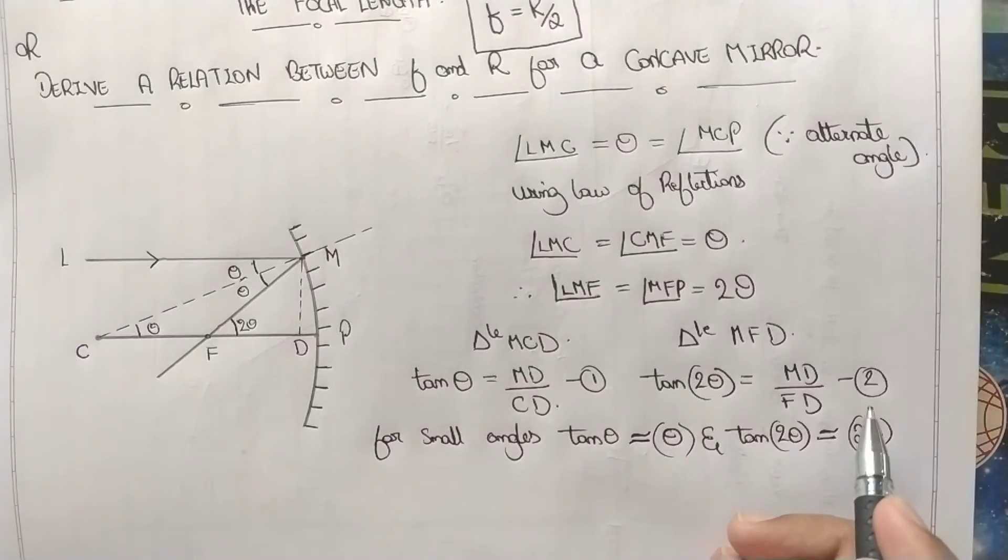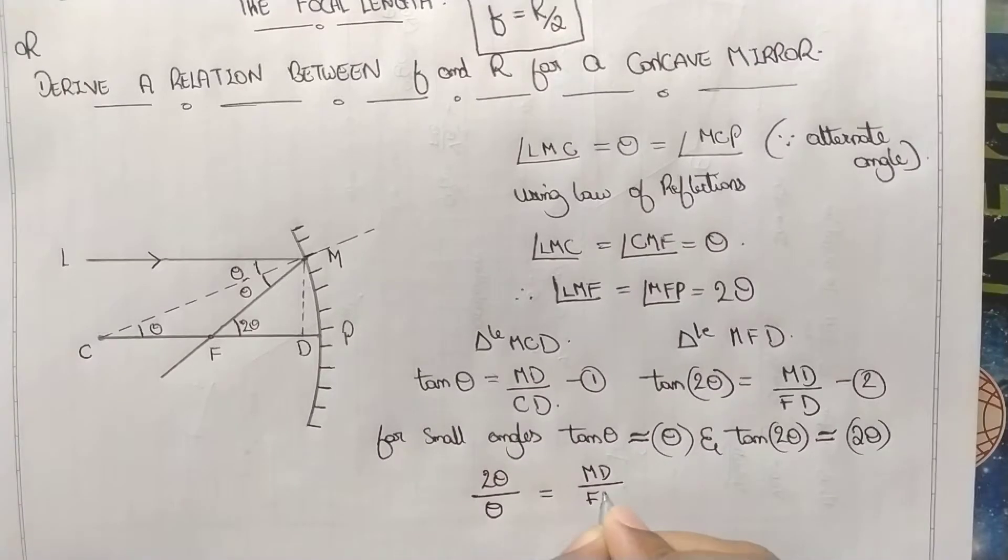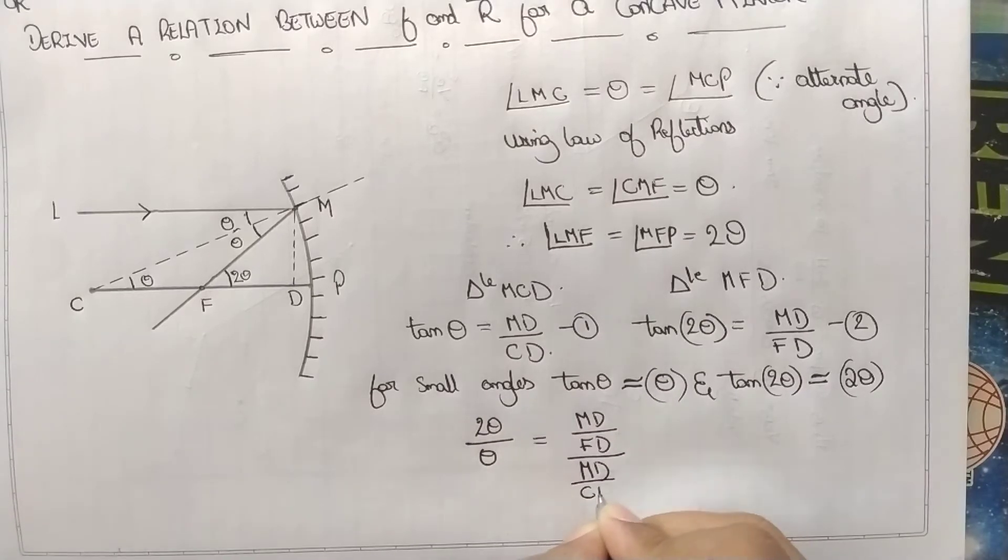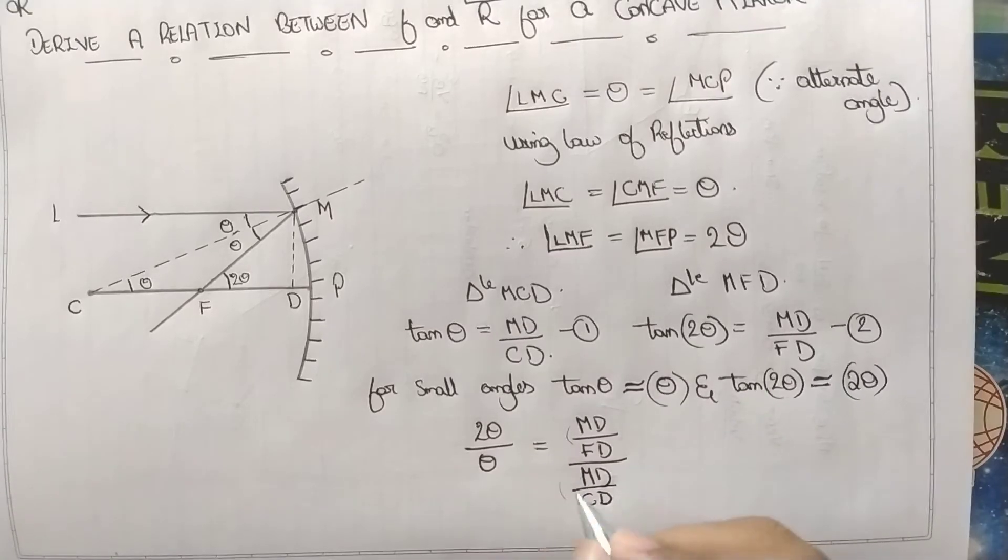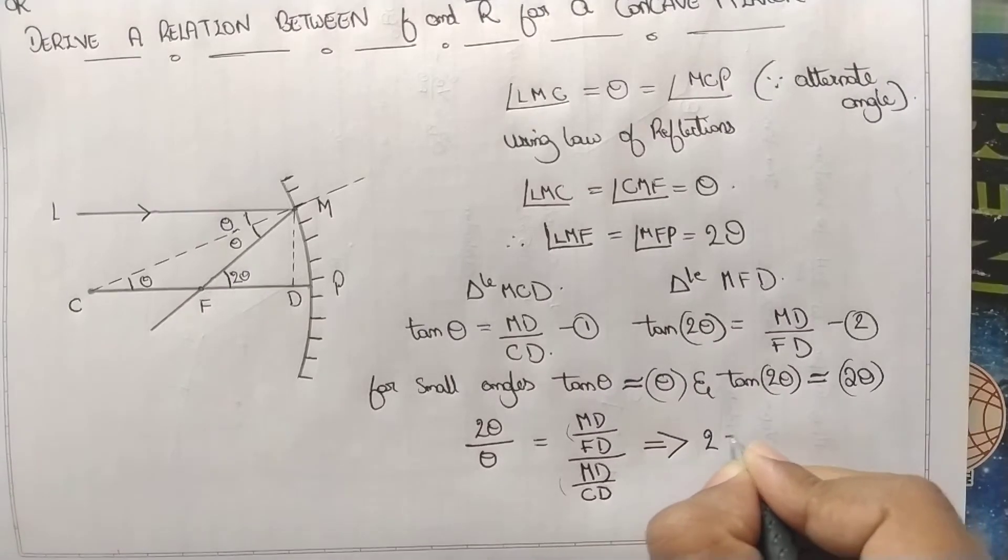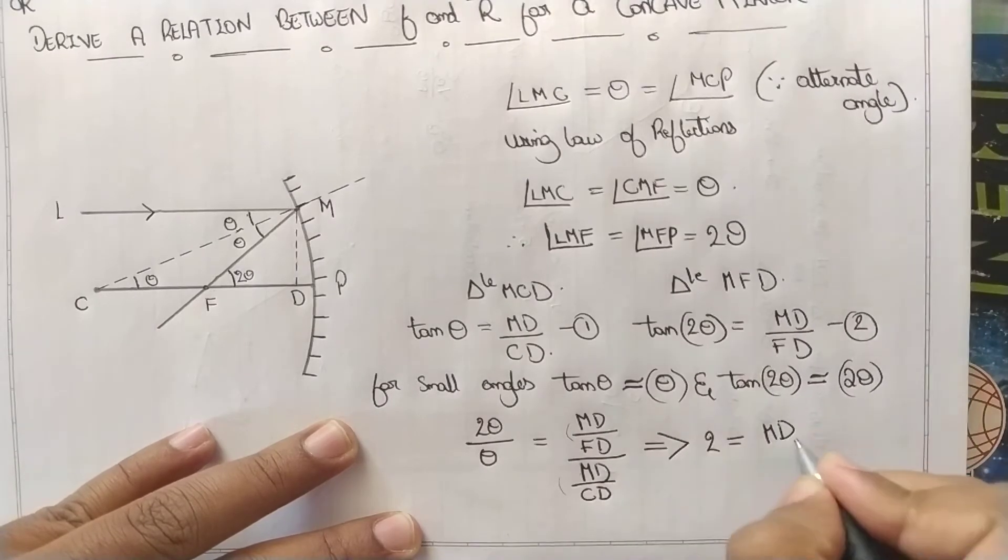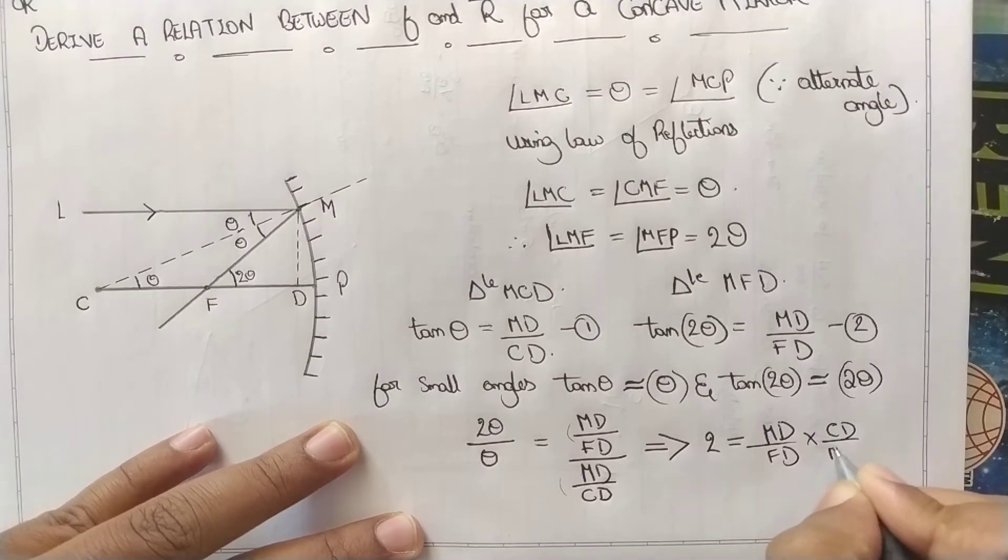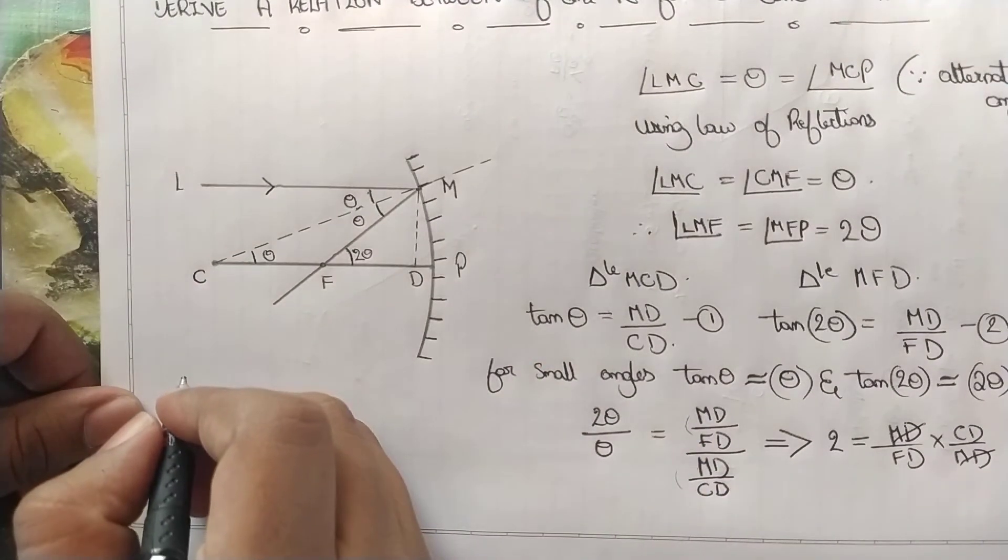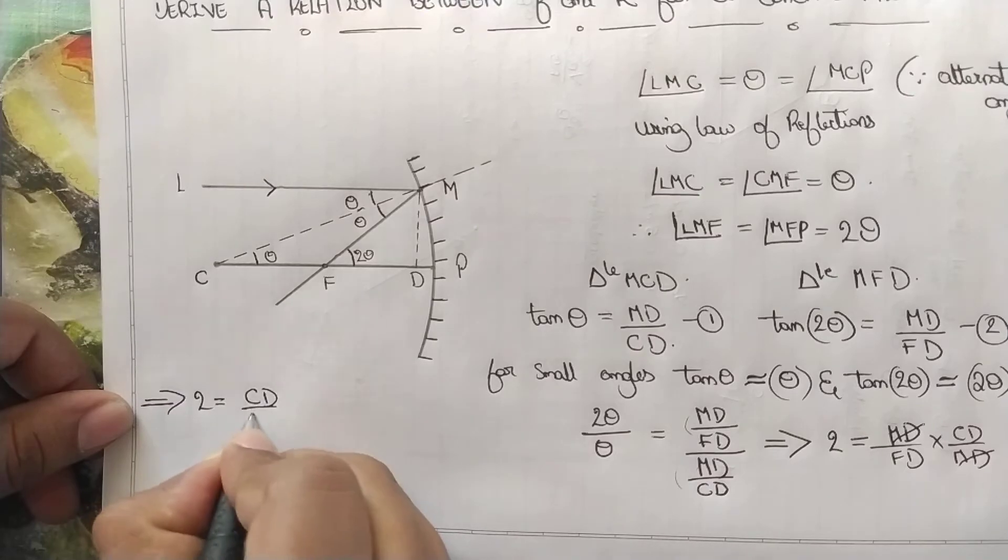Now divide 2 by 1. 2 theta divided by theta equals MD by FD divided by MD by CD. This is from equation 2 and equation 1. What are we left with? 2 equals MD by FD times CD by MD. MD cancels with MD. Now 2 equals CD by FD.